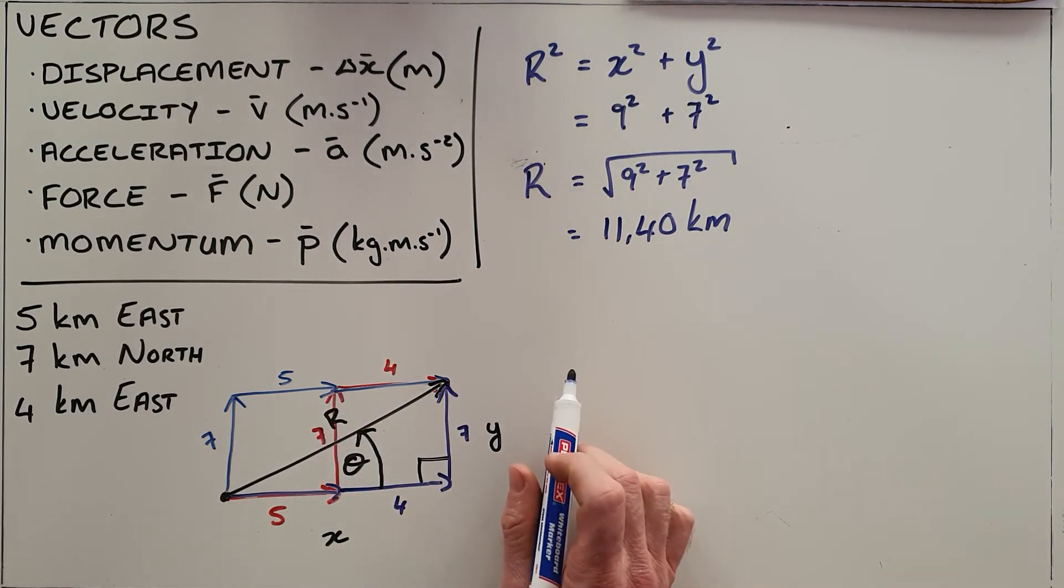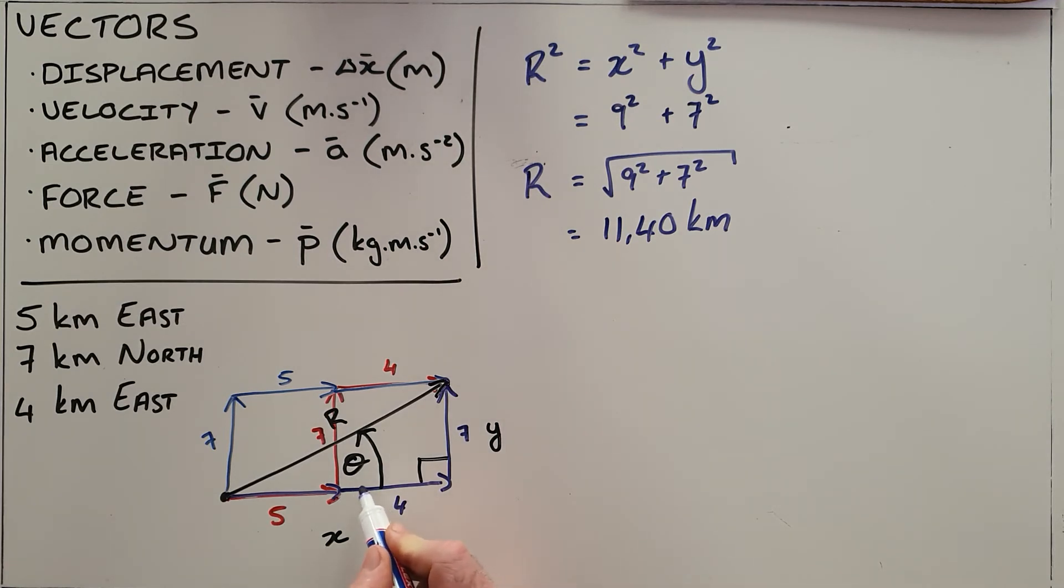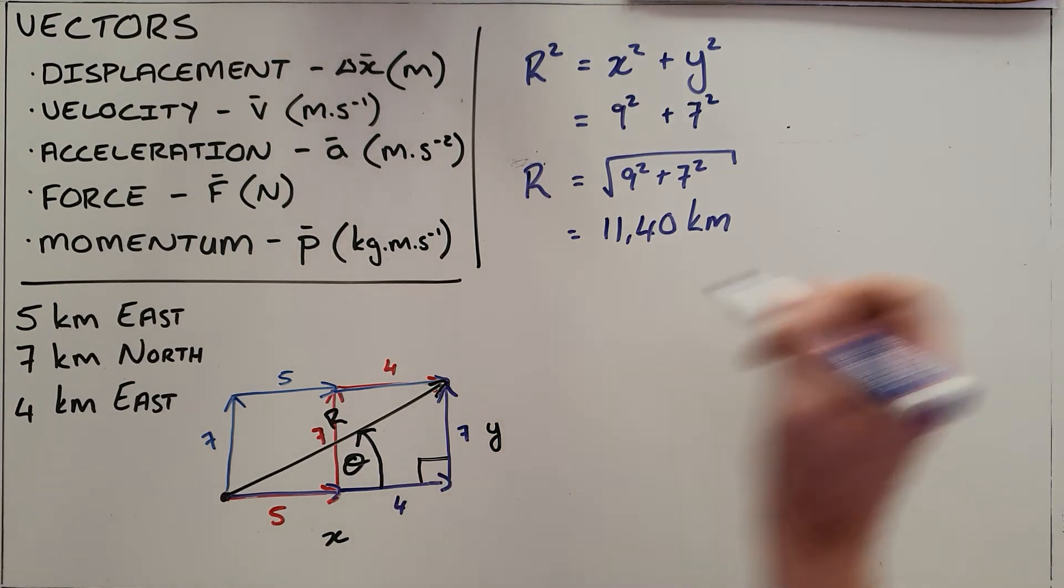Now obviously because this is a vector, the direction is also important, and so what we can see is that we have a right angle triangle with an angle theta that allows us to use any one of our trigonometric functions.